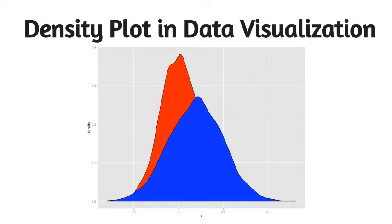This chart is a variation of a histogram that uses kernel smoothing to plot values, allowing for smoother distributions by smoothing out the noise.